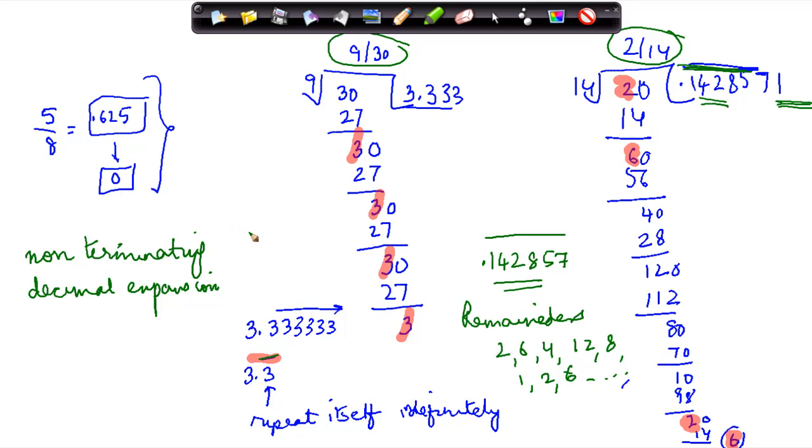These are basically your non-terminating, recurring decimal expansions.